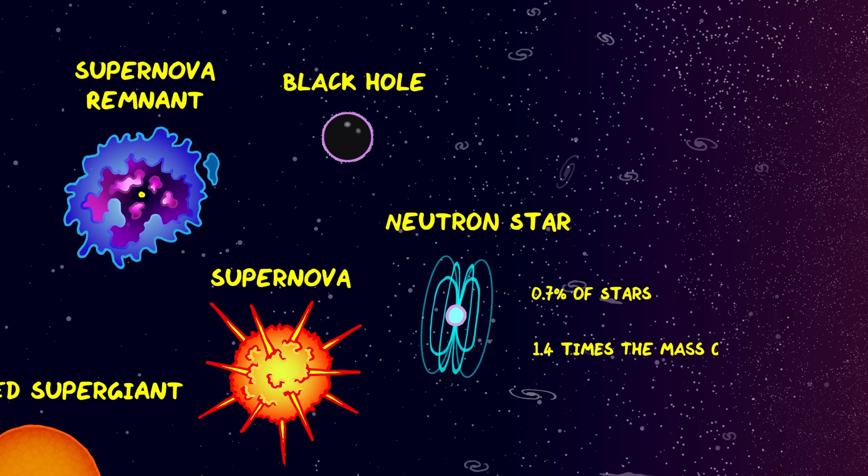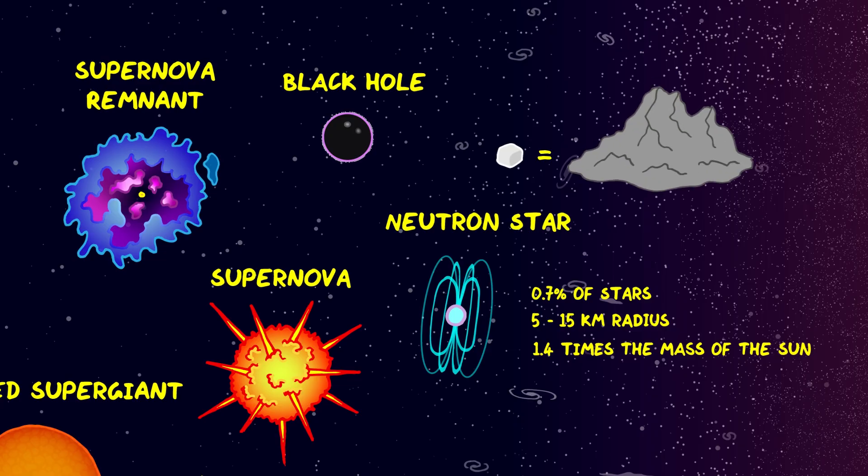They have a mass of about 1.4 times the mass of the Sun, but squeezed into a radius of only 5 to 15 kilometers. This is so incredibly dense, a sugar cube sized piece of neutron star would weigh as much as Mount Everest.